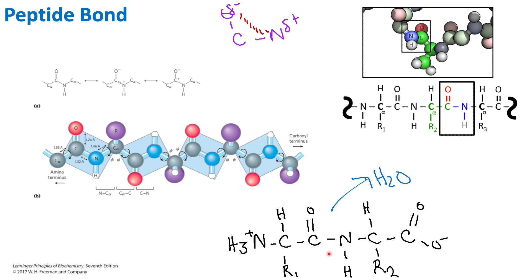The peptide bond has a partial double bond character that restricts rotation, and in this diagram we can see that restriction of rotation depicted in the blue boxes. The peptide bonds shown in the blue boxes are not free to move, whereas the alpha carbon is free to rotate. These electrons are also able to form a double bond with the nitrogen, which is essentially the peptide bond between amino acids.